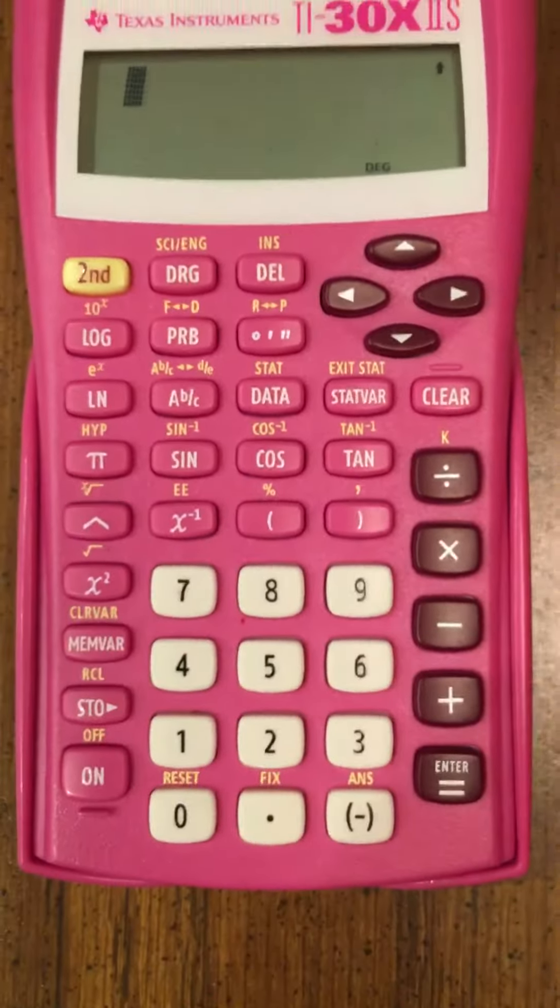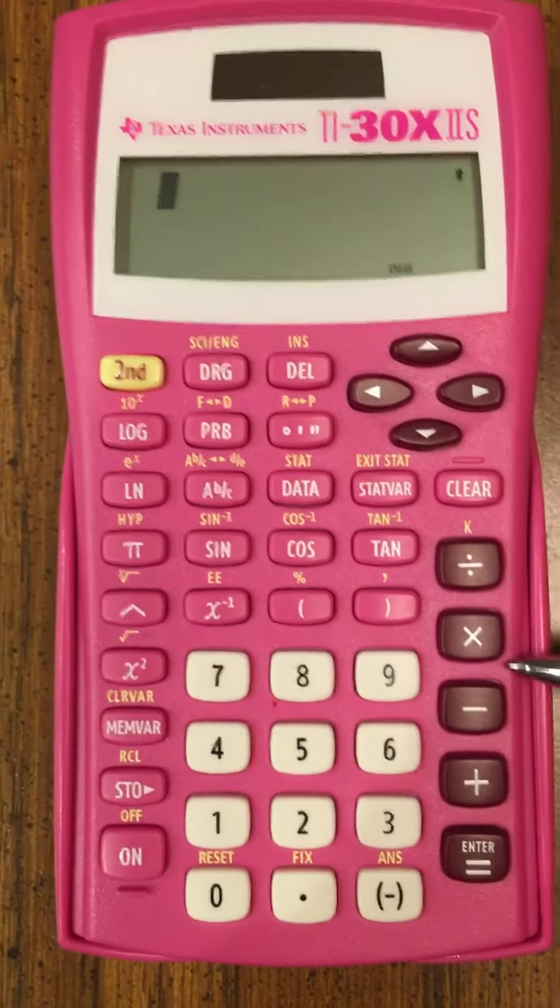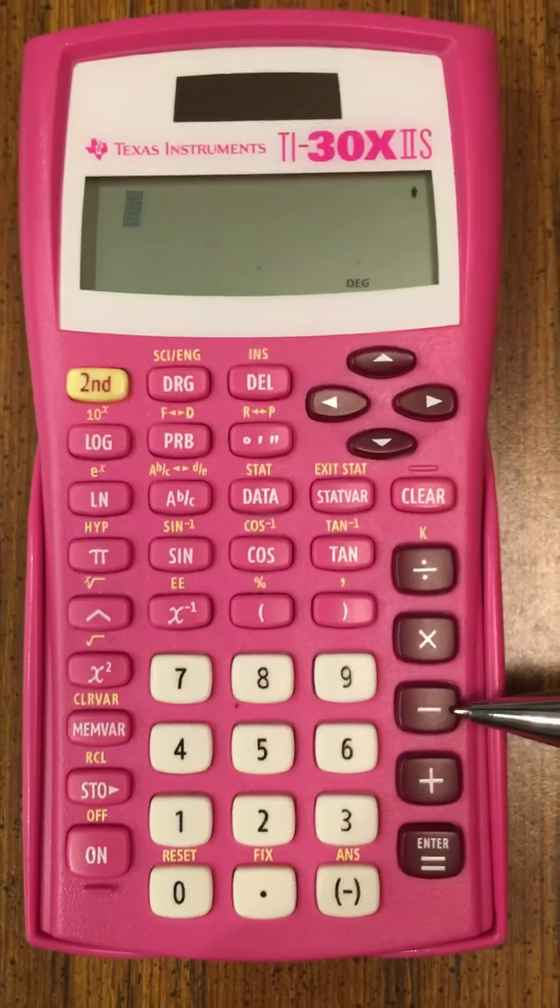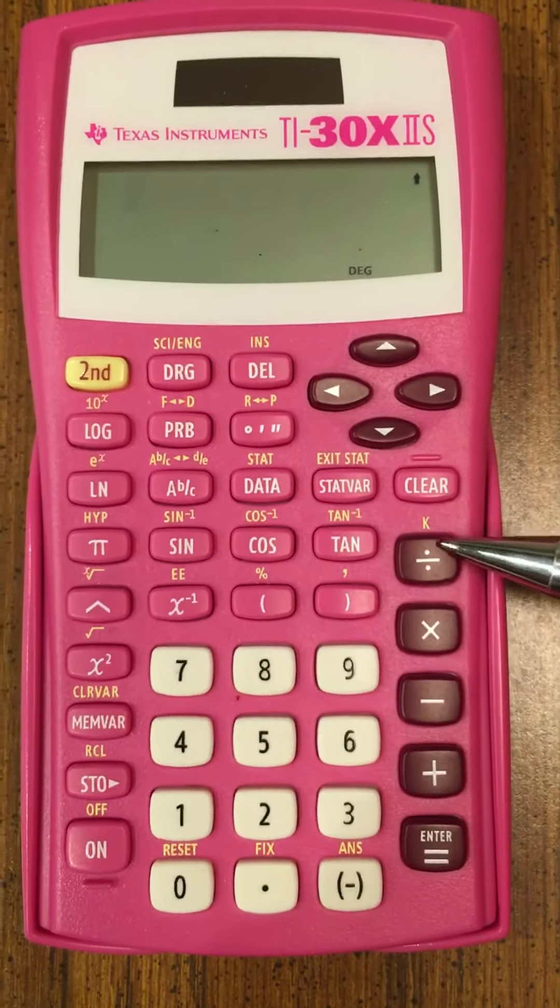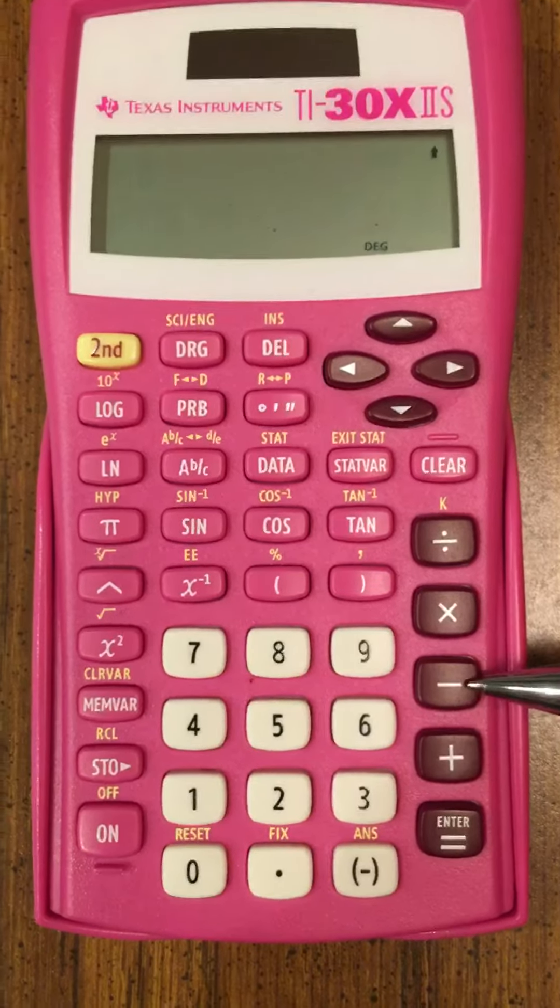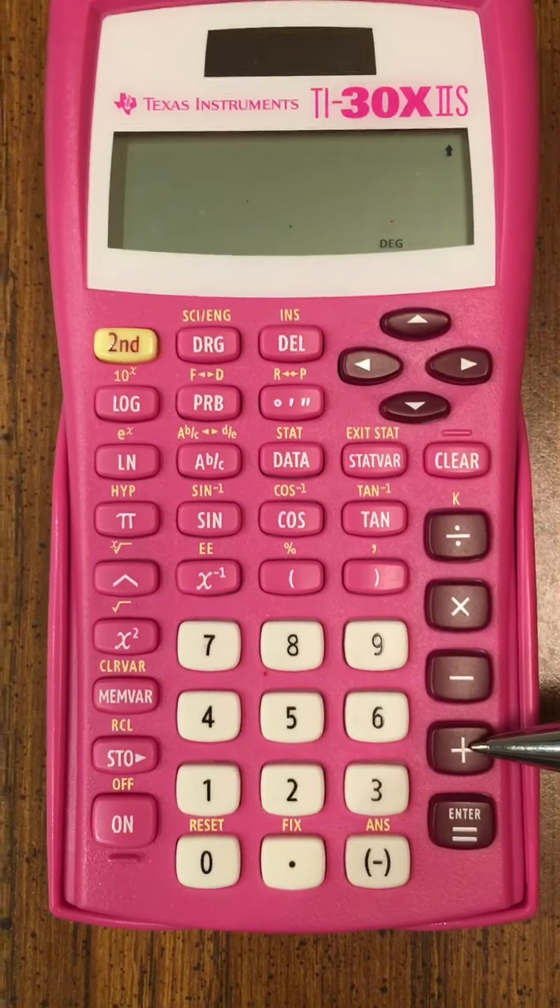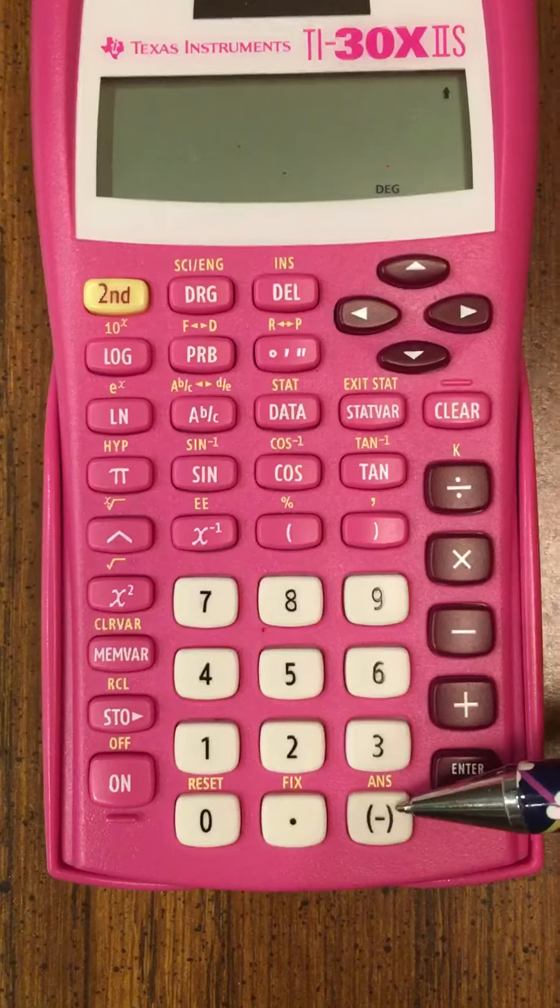Let me show you your calculator. On your calculator, this button right here is your subtraction. These are your operations: division, multiplication, subtraction, addition. This button right here is your negative.